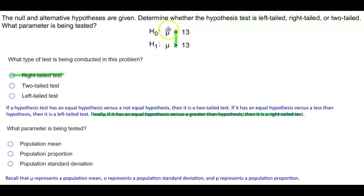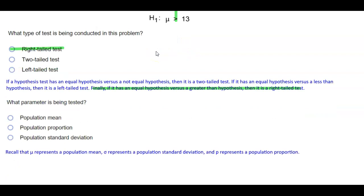This is telling us that the population mean is equal to 13, and the population mean is greater than 13 for the alternative hypothesis. So since mu represents the population mean, then our result is the population mean.